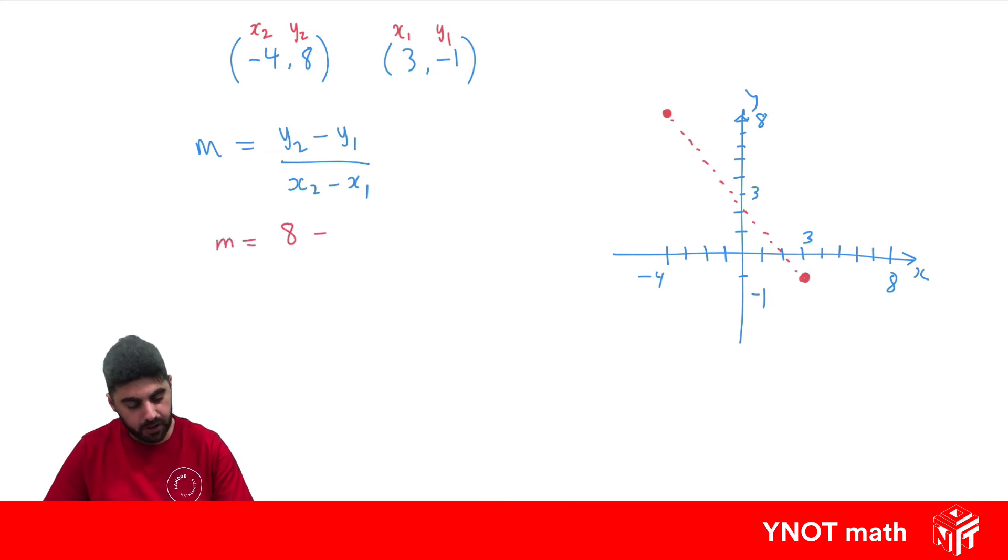So y2 is 8 minus y1, which is minus 1. So again, we have to be careful here when subbing in because the minus belongs to the formula and this minus belongs to the y1 over x2, which is minus 4 minus x1, which is 3.